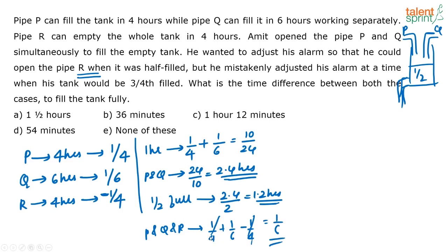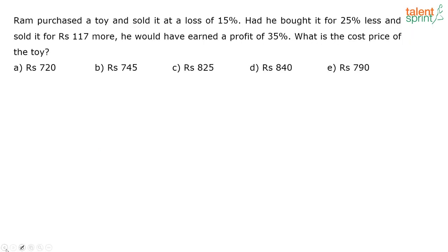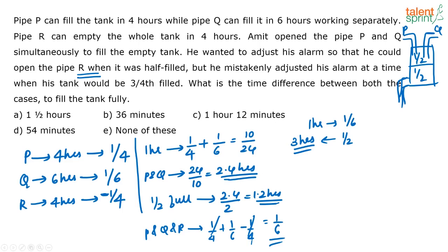When all three pipes are working together, the net work done is only 1/6 per hour. The tank is half full, so the remaining half has to be filled. If in 1 hour we can fill 1/6 of the tank, the remaining half will be filled in 3 hours. So the total time taken in case 1 is 1.2 hours plus 3 hours, which equals 4.2 hours.